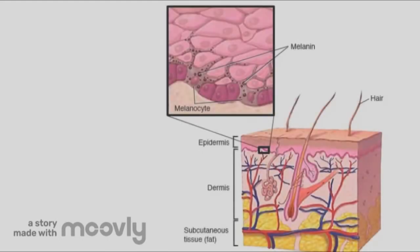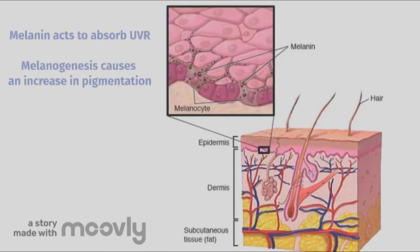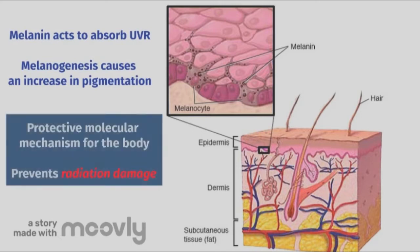Tans are formed due to melanin, located in the basal layer of the epidermis. Melanin acts to absorb UVR and undergoes melaninogenesis, causing an increase in pigmentation. This is a protective molecular mechanism for the body as it prevents radiation damage from occurring in the skin cells.